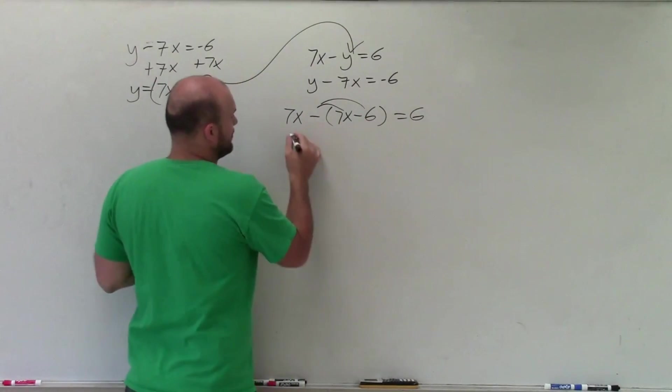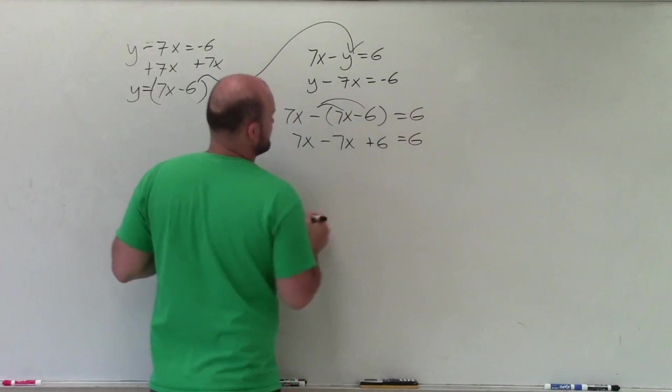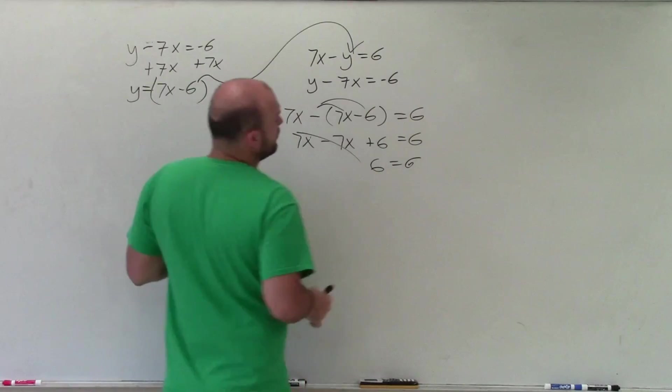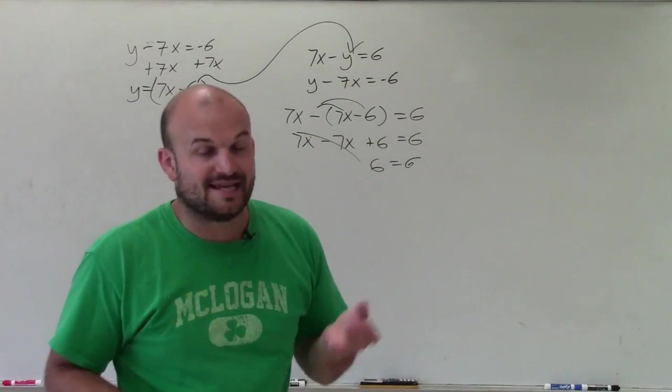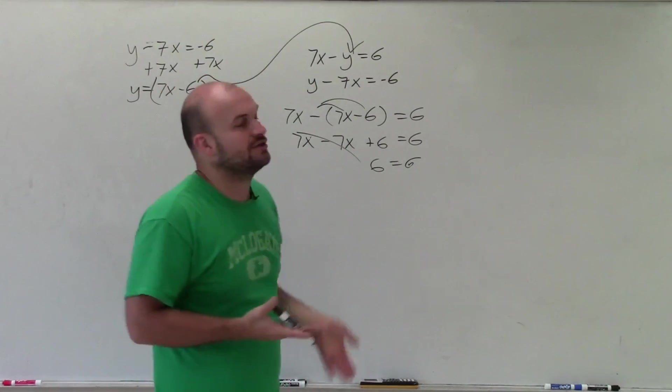Well, I need to make sure I apply the distributive property. So I have 7x minus 7x plus 6 equals 6. Well, that goes to 0. And I'm left with 6 equals 6, which is always going to be true. So therefore, we have a consistent solution that is dependent. This is infinitely many solutions.